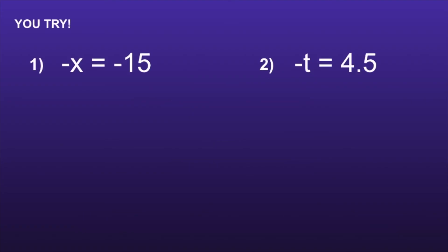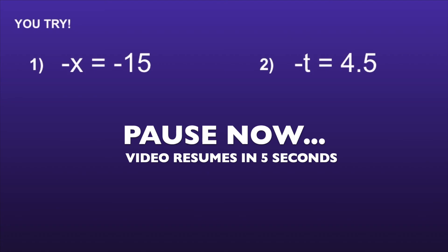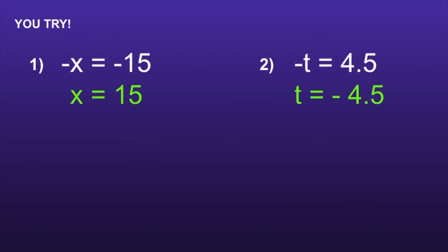Now I have two more problems for you to try. The first one is negative x is equal to negative 15. The second one is negative t is equal to 4.5. I recommend you pause the video now, solve, and then resume when you're ready to check your solutions. The answers: number one is x is equal to 15, and number two is t is equal to negative 4.5.